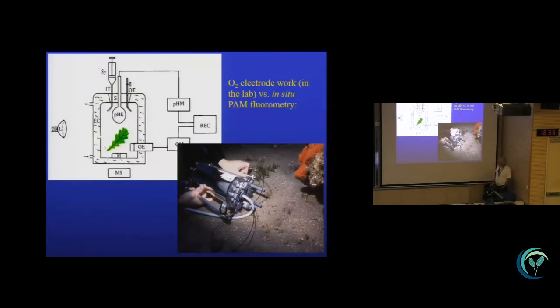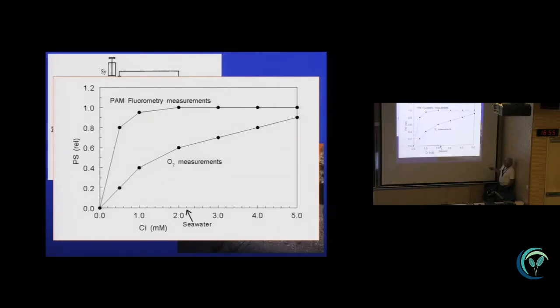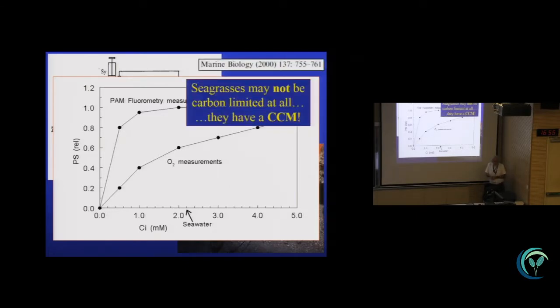Another thing that I think is quite remarkable, we used to work with oxygen electrodes, meaning that you had to excise the leaves, take them to the lab, put them in an oxygen electrode chamber, and we came to the conclusion by these experiments that seagrasses were carbon-limited in today's carbon environment. When we did these works with the PAM fluorometer on in-situ plants, we came to completely different results. As you can see in the PAM fluorometer in-situ, we get saturation long before we reach the 2.2 millimolar of inorganic carbon in seawater. And the conclusion here was then, it changed the dogma that seagrasses are carbon-limited, that they are not carbon-limited at all, many of them. They have good CO2 concentrating systems, and they are saturated at today's CO2 concentration.